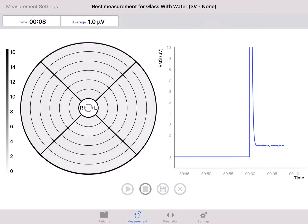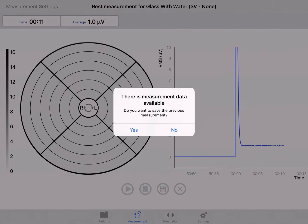To stop the measurement, select the stop button. A new measurement can be started immediately by pressing the start button again. The system will ask you whether or not to save the previous measurement.